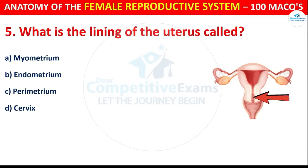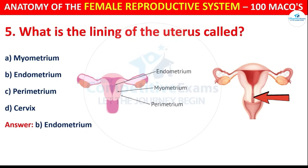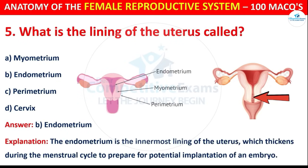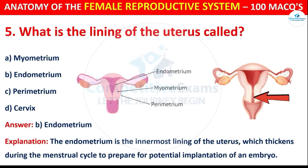The correct answer is B, i.e. Endometrium. The endometrium is the innermost lining of the uterus which thickens during the menstrual cycle to prepare for potential implantation of an embryo.